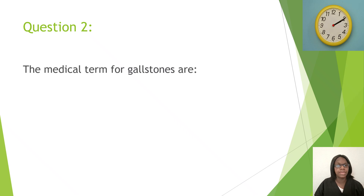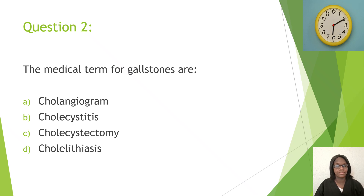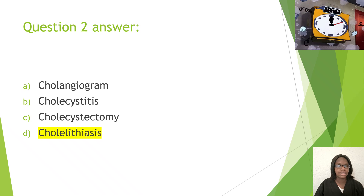Question two: The medical term for gallstones — A, cholangiogram; B, cholecystitis; C, cholecystectomy. The correct answer is D, cholelithiasis. The correct answer is D — and if I'm saying it wrong, you all get what the answer is.